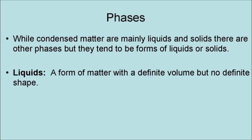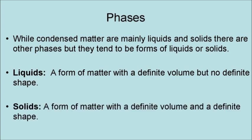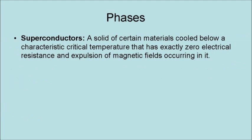Liquids are a form of matter with a definite volume but no definite shape. Solids are a form of matter with a definite volume and a definite shape. Superconductors are a solid form of certain material cooled below a characteristic temperature that has exactly zero electrical resistance and is repulsive of magnetic fields occurring within it.